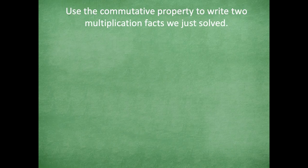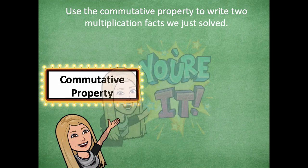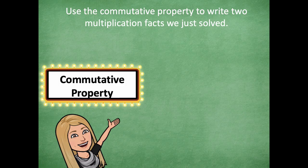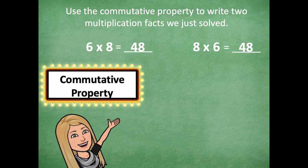So on this one, I want you guys to use the commutative property to write the two multiplication facts that we just solved for. Pause the video, write the two facts — we did six times eight, and write the other one as well, then solve for both. We solved for six times eight and eight times six. Six times eight is 48, so eight times six has to be the same, which is also 48.